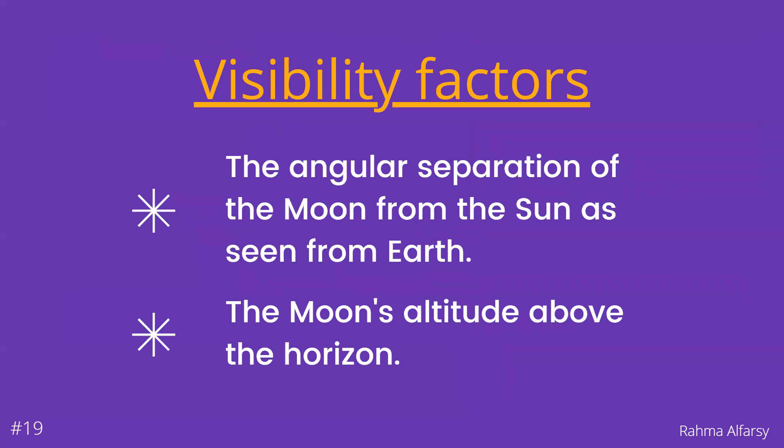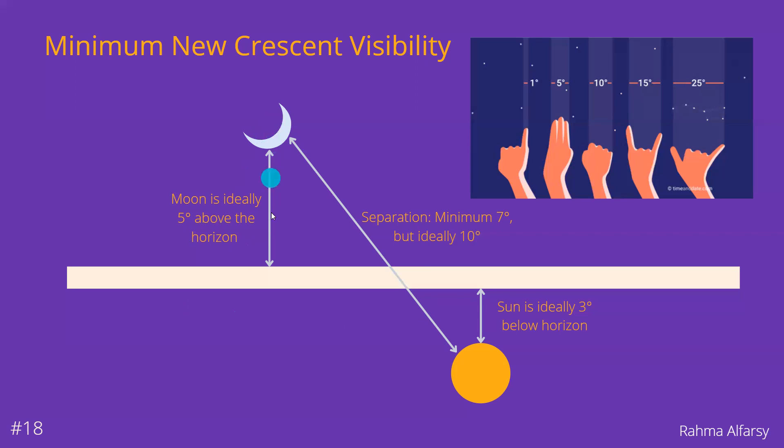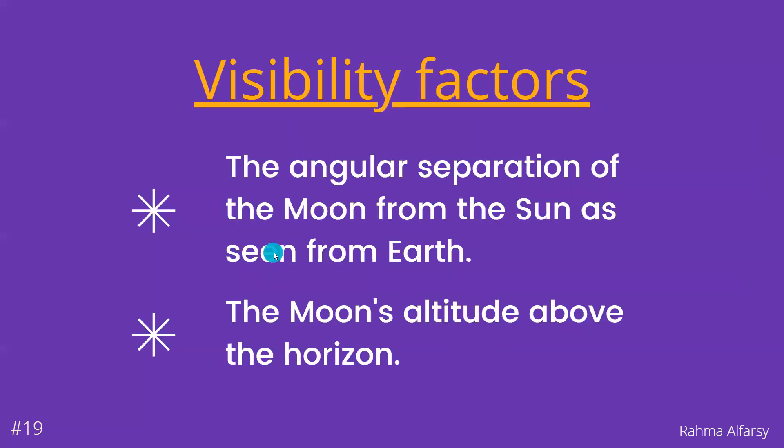The two main factors that allow us to sight a new crescent are: the angular separation of the Moon from the Sun as seen from the Earth, which we have already mentioned, and also the Moon's altitude above the horizon, signified by this vertical line here. If the crescent thickness is sufficient but it is not above the horizon, then obviously it cannot be seen. And also, if the Moon is above the horizon but it is close to the Sun — within the Sun's glare — then it may not be visible.